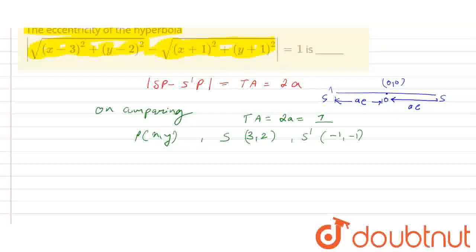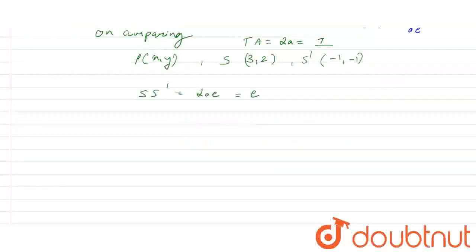The distance between the foci is 2ae. So SS' equals 2ae. But we found that 2a equals 1, so SS' equals e, meaning the distance between the foci equals the eccentricity.